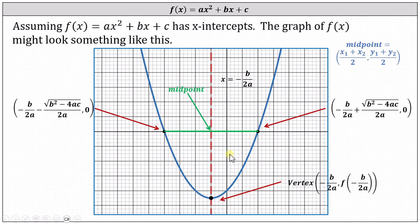The graph might look something like this, where the x-intercept on the left is (-b/2a - √(b² - 4ac)/2a, 0) and the x-intercept on the right is (-b/2a + √(b² - 4ac)/2a, 0).